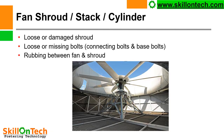Fan shroud, stack, or cylinder — you can see a picture of a fan cylinder and a fan with a gear box. Common problems include loose or damaged shrouds, loose or missing connecting bolts and base bolts, and rubbing between fan and shroud. If your fan is rubbing with the inside periphery of the fan cylinder, it will make noise and can damage the fan cylinder and blades. Connecting bolts and base bolts may loosen during operation; they shall be tightened or replaced.